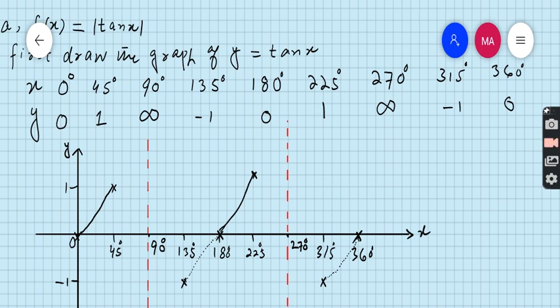This one at 135, the value is minus 1, so after reflecting this minus 1 becomes positive 1. So this is the first part. Just reflect, and look at this: at 315 the value is minus 1, it should be plus 1.